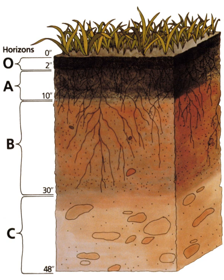Soil compaction, also known as soil structure degradation, is the increase of bulk density or decrease in porosity of soil due to externally or internally applied loads. Compaction can adversely affect nearly all physical, chemical and biological properties and functions of soil.